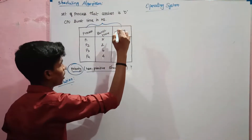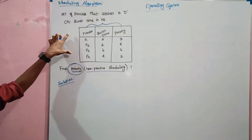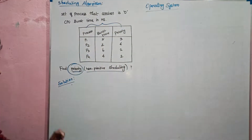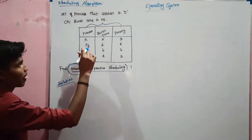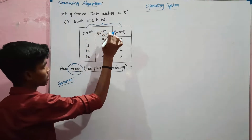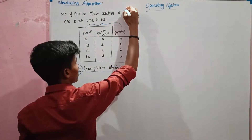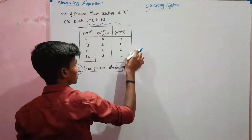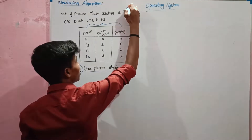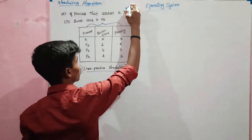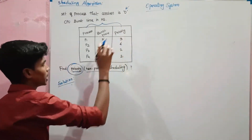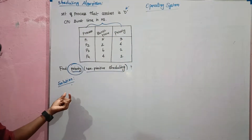FIFO and SJF use the same question. Process first time priority — without arrival time, in this case arrival time is 0.